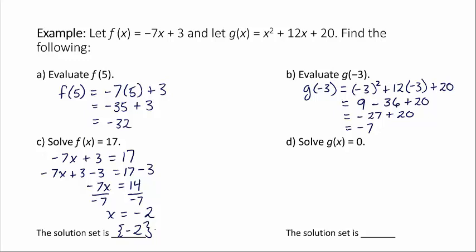Okay, so now let's look at this one with g(x). So it says solve g(x) is equal to 0. So what is g(x)? It's this quadratic that we're given, right? x² + 12x + 20. So if we say g(x) is equal to 0, that means we want to set that whole expression equal to 0 and solve that. So this is a quadratic.